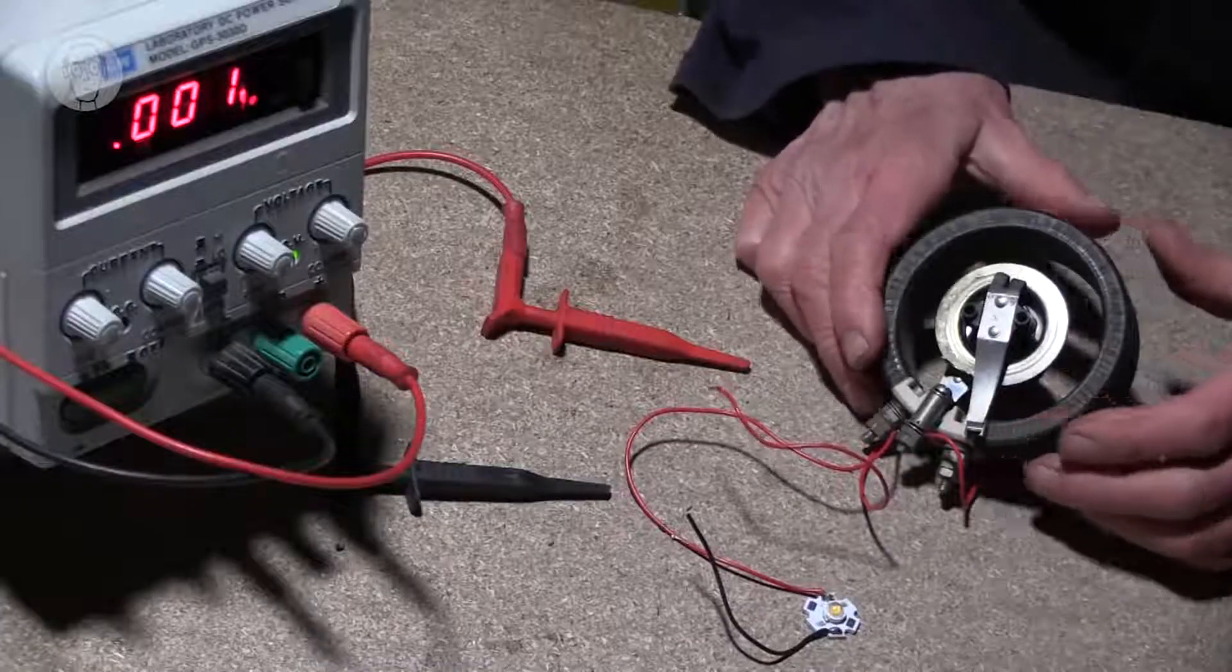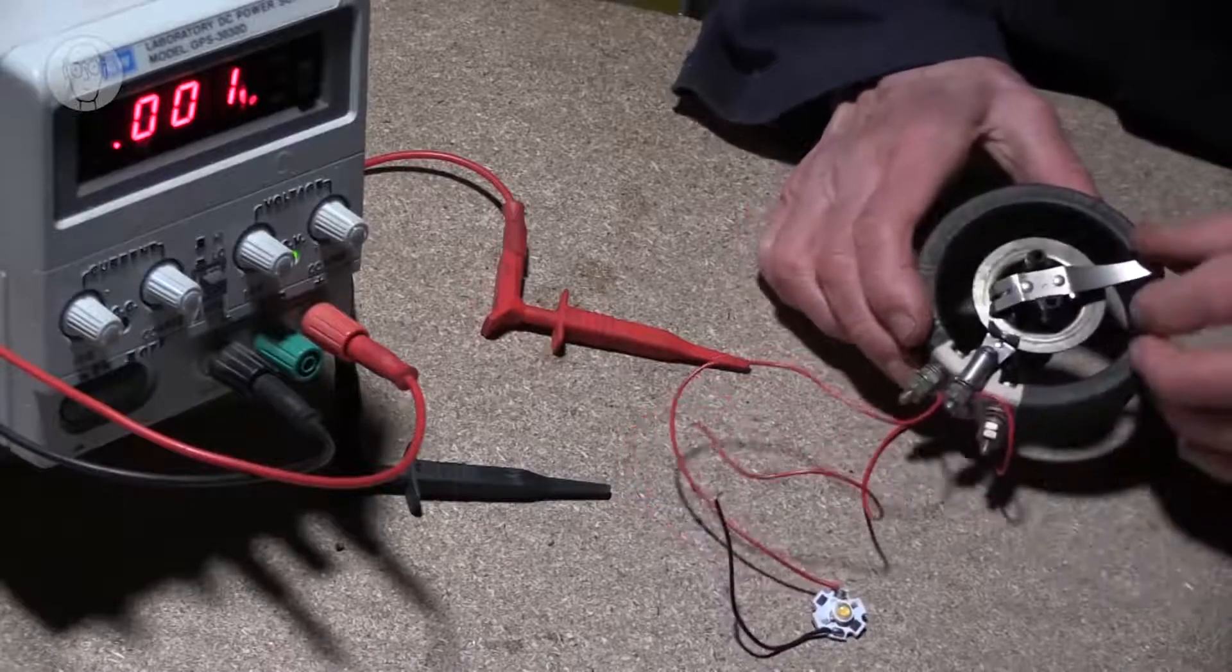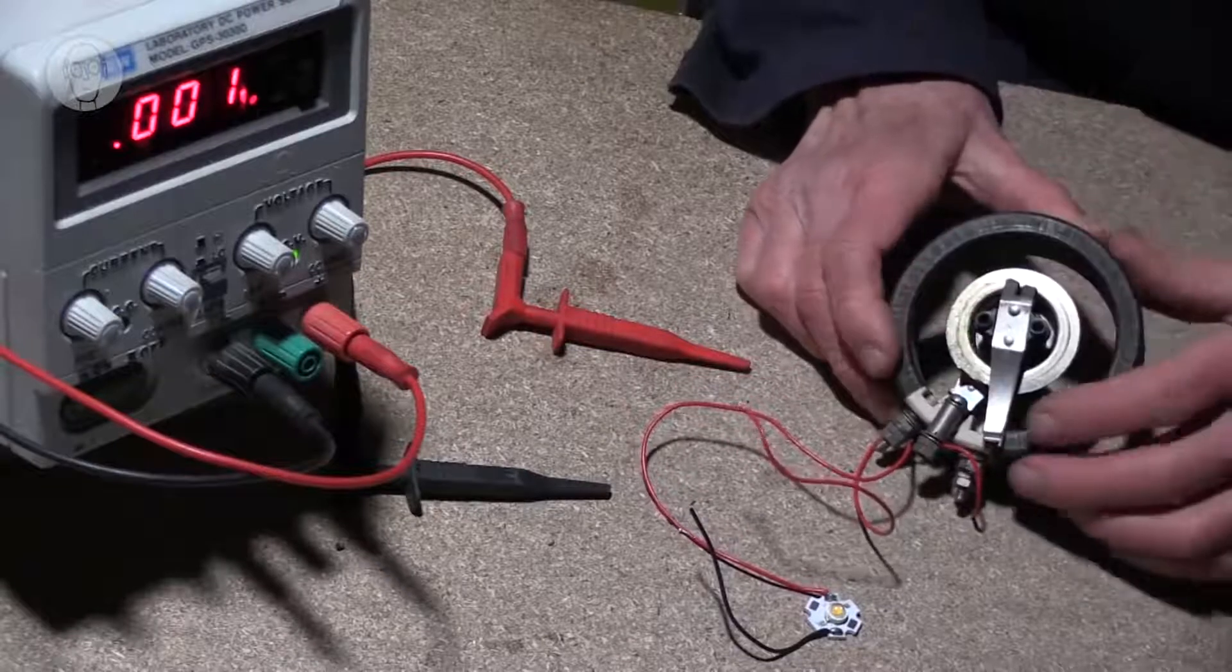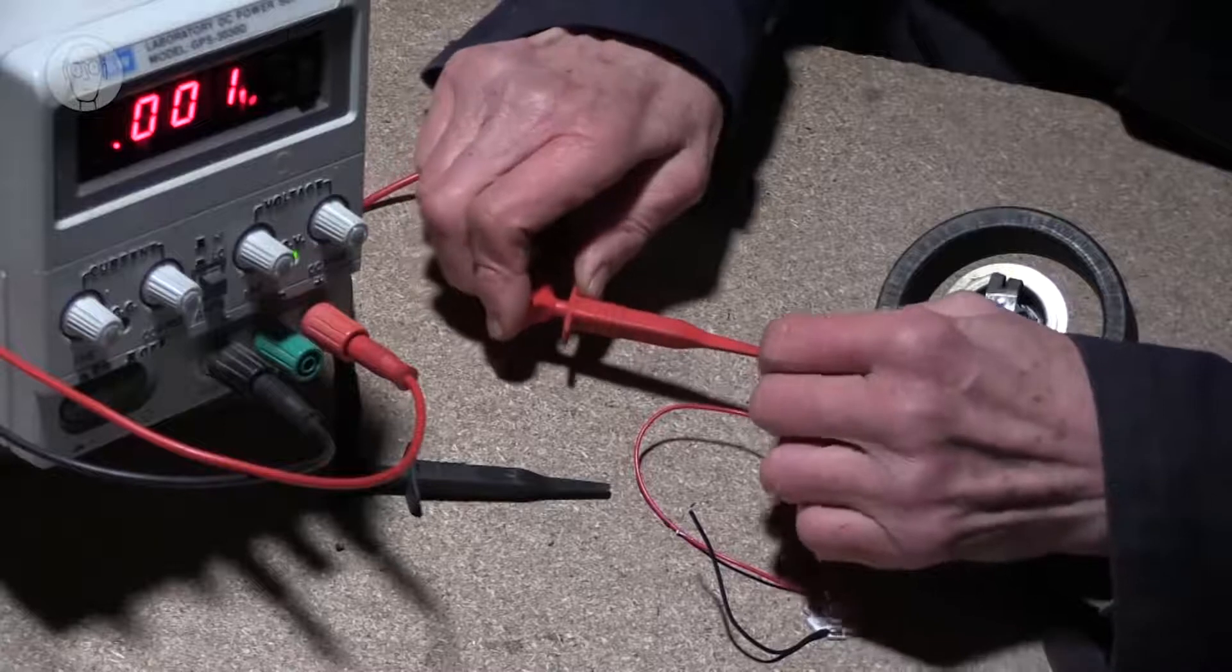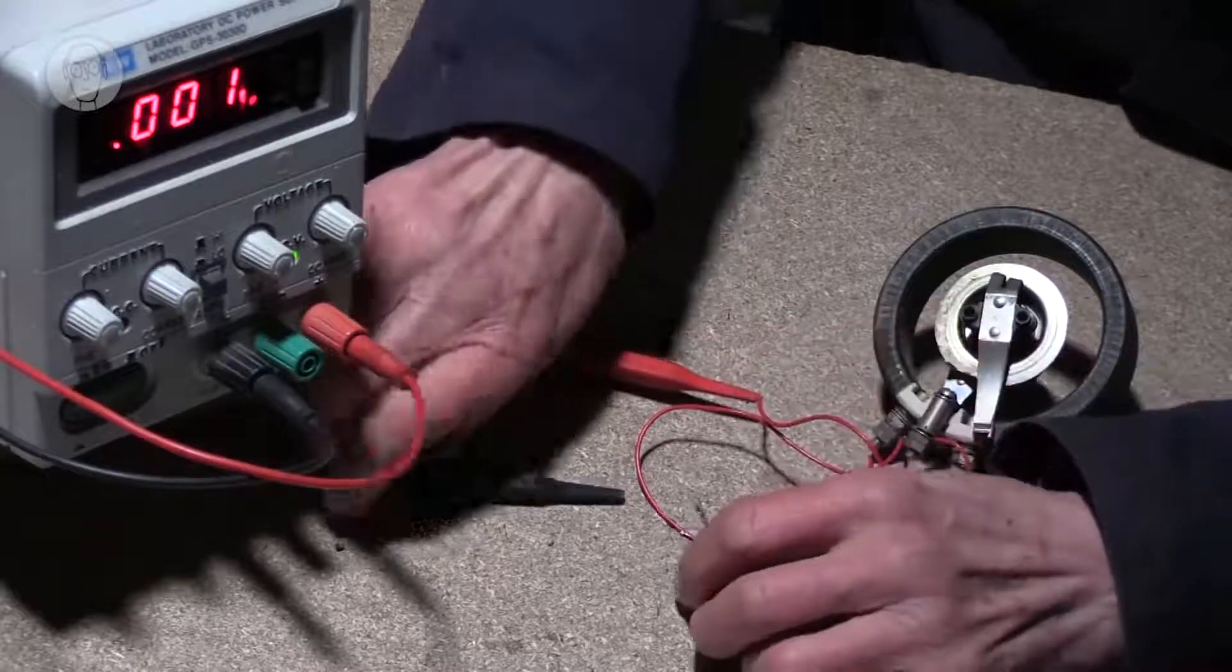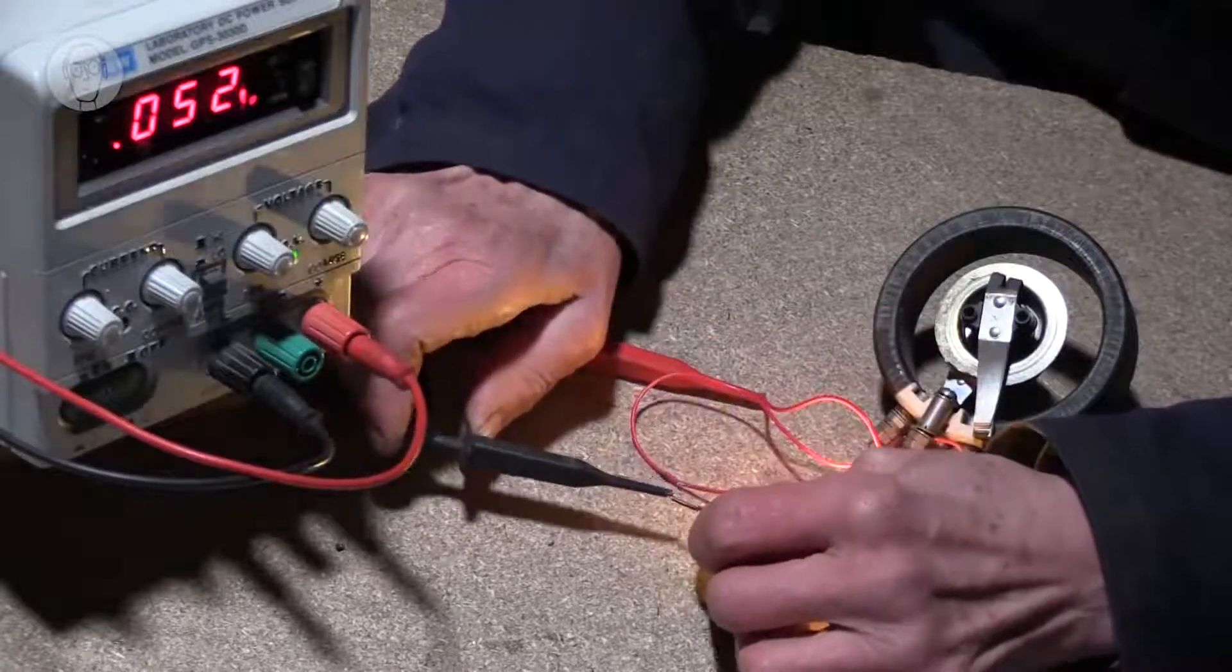First of all, you have to check that the resistance is set at its maximum resistance of 175 ohms. Then we're all ready to connect up the LED.